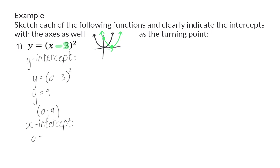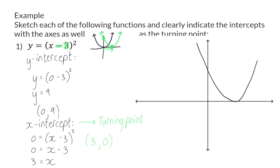To determine the x-intercept, we change y to 0 in the equation and solve x. The x-intercept in this case will be the same as the turning point, and the turning point can be seen in the equation by taking the p-value with the opposite sign and the q-value, which in this case is 0. So when we draw this graph, there will be two coordinates indicated: the y-intercept at (0, 9) and the x-intercept, which is also the turning point, at (3, 0). Our axis of symmetry is on the turning point, on the line x is equal to 3.